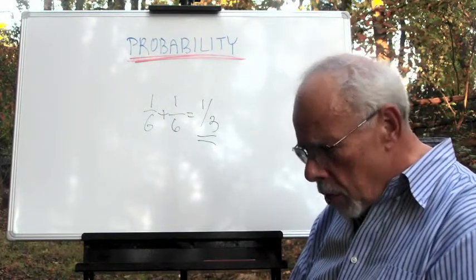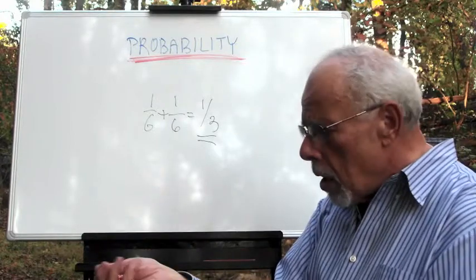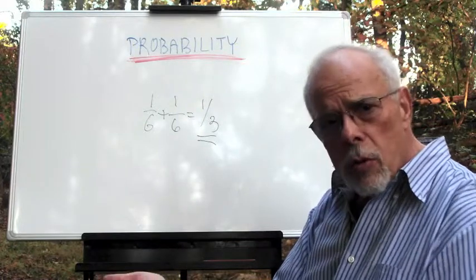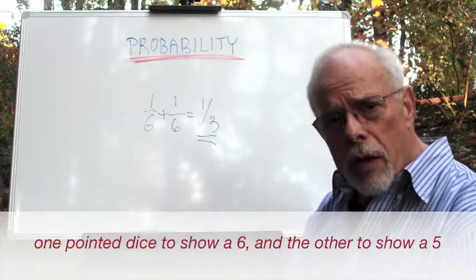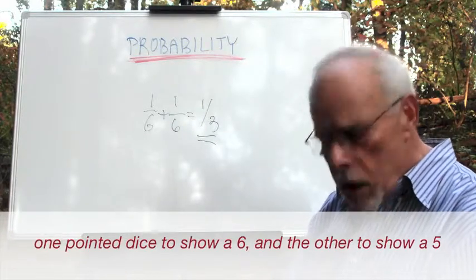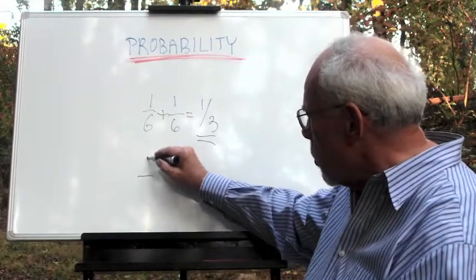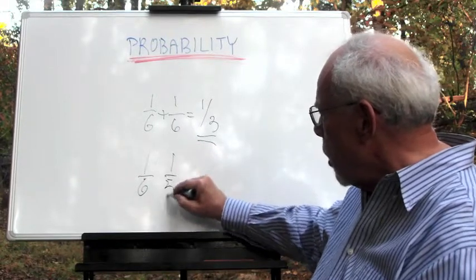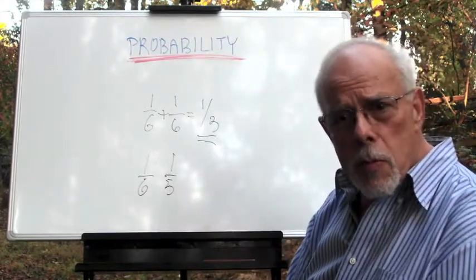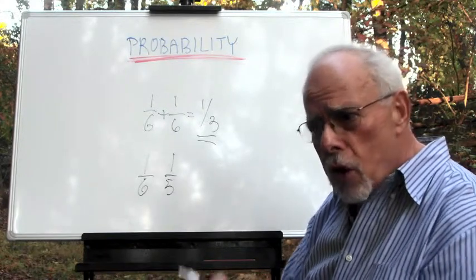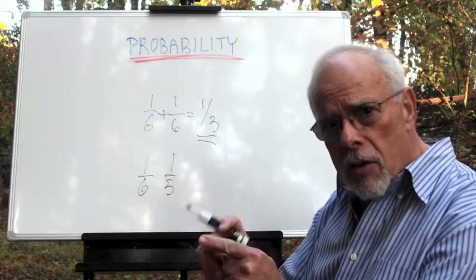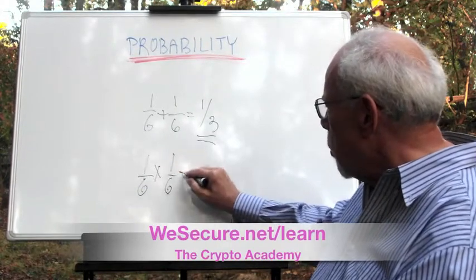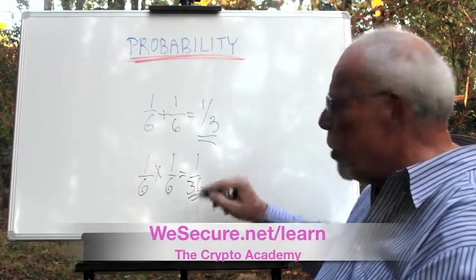And then we ask ourselves, what if we have two dice? And what's the chance that one of them will show a six and the other will show a five? The chance for this to show a six is one-sixth. The chance for the other to show a five is one-sixth. The chance for the combined event, six here and five there, is the multiplication of the two, which is one-thirty-sixth.